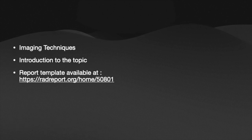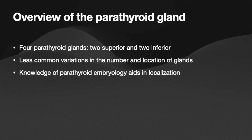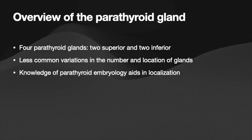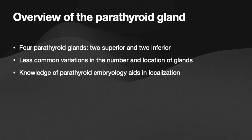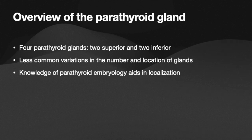Other relevant information the surgeon is looking for includes ectopic or supernumerary parathyroid tissue, concurrent thyroid pathology, and arterial as well as recurrent laryngeal nerve anomalies. The parathyroid glands include two superior and two inferior glands, and there can be anatomical variations in their location. Knowledge of embryology helps in detection of additional lesions and anatomic localization, since not uncommonly there are numerous parathyroid adenomas or hyperplasia in a person with hyperparathyroidism.